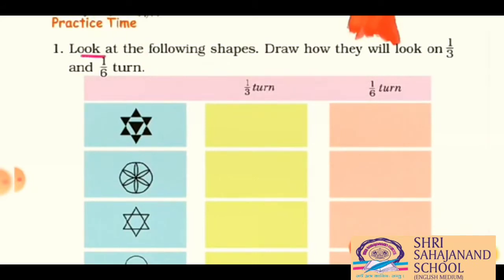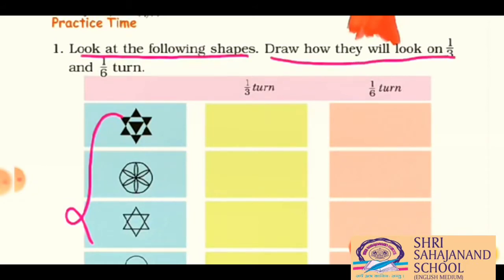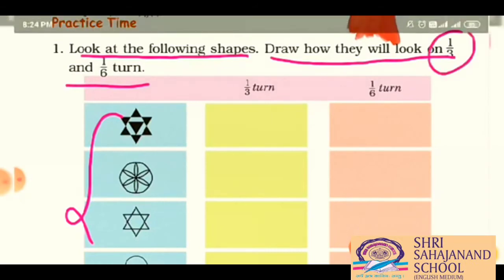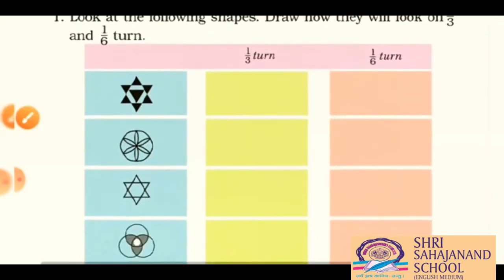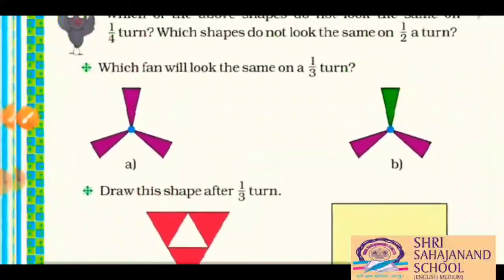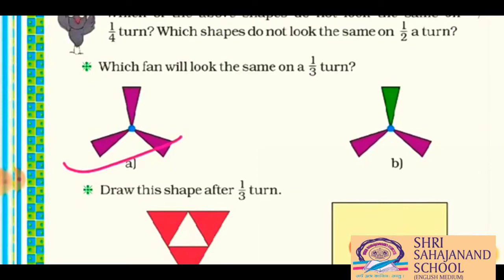Now we have some practice time. First we have to read this question, then we will solve it. Look at the following shapes — here we have the shapes. Draw how they will look on one-third and one-sixth turn. Before solving this question, we have to understand what is one-third turn. In the previous video, we clarified what is one-third turn. For one-third turn, we have to divide the shape into three equal parts, like the blades are. So each part is known as its one-third turn.